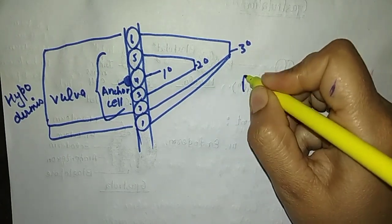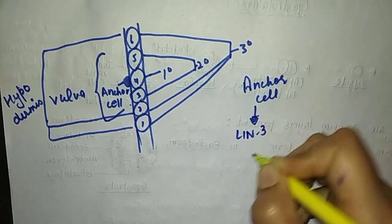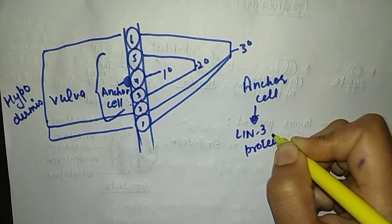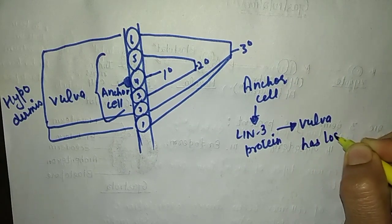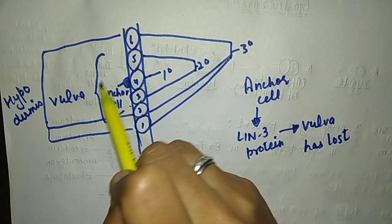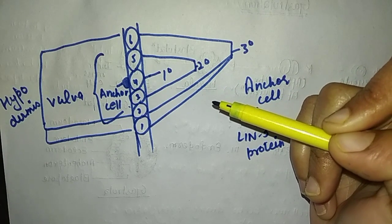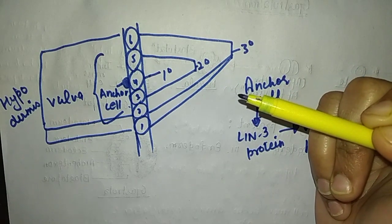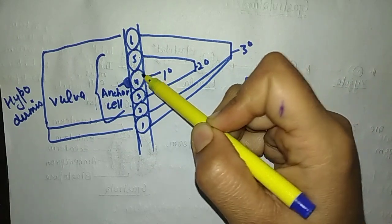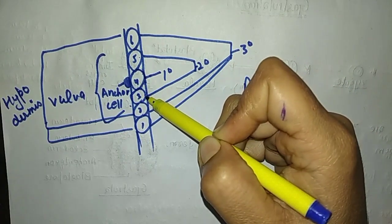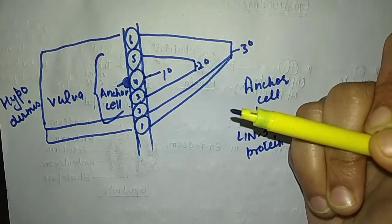Now, what happens if the anchor cell, which secretes lin-3 protein and drives vulva formation, has been lost? If this anchor cell is destroyed or mutated, it leads to the formation of complete hypodermis — which means there is no vulva formation. Also, the primary central cell gives signals to both secondary cells to form lateral cells.